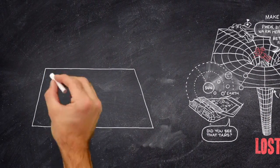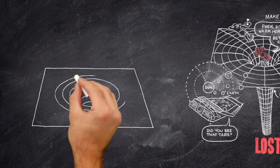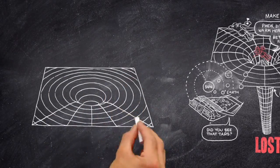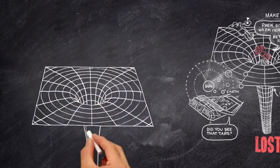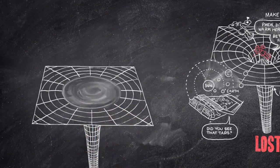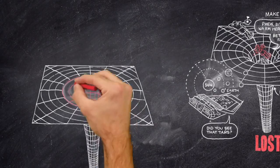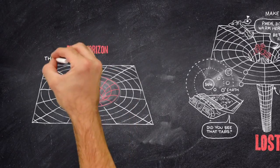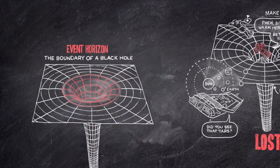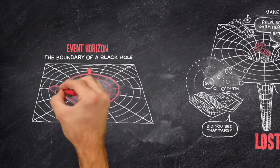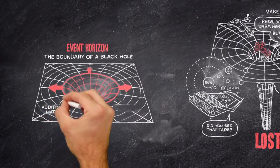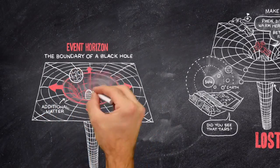There was a dramatic advance in our understanding of these mysterious phenomena with a mathematical discovery in 1970. This was that the surface area of the event horizon, the boundary of a black hole, has the property that it always increases when additional matter or radiation falls into the black hole.